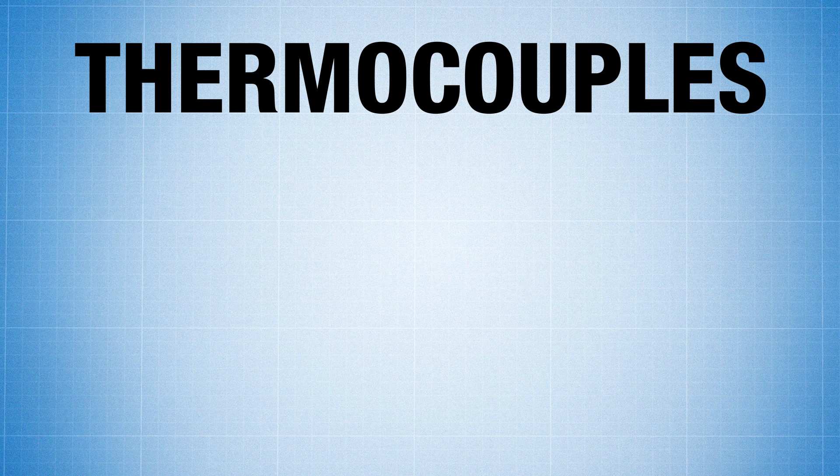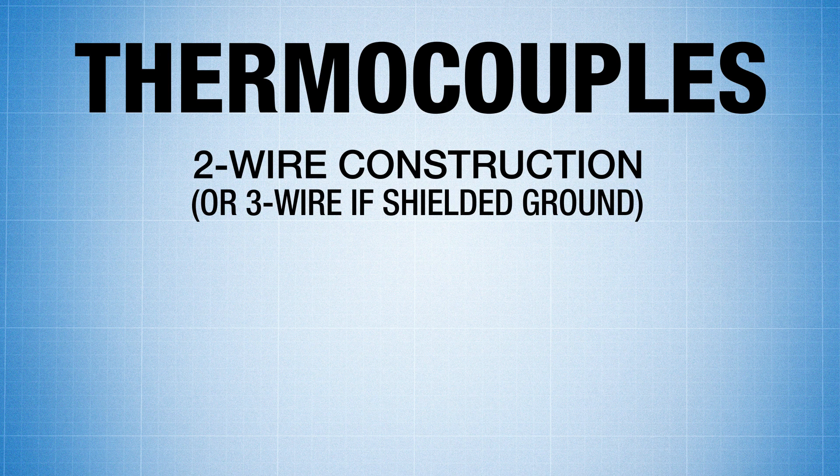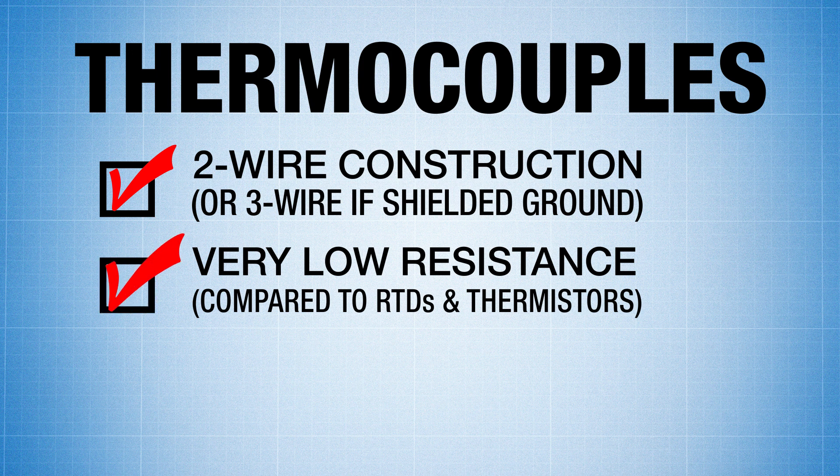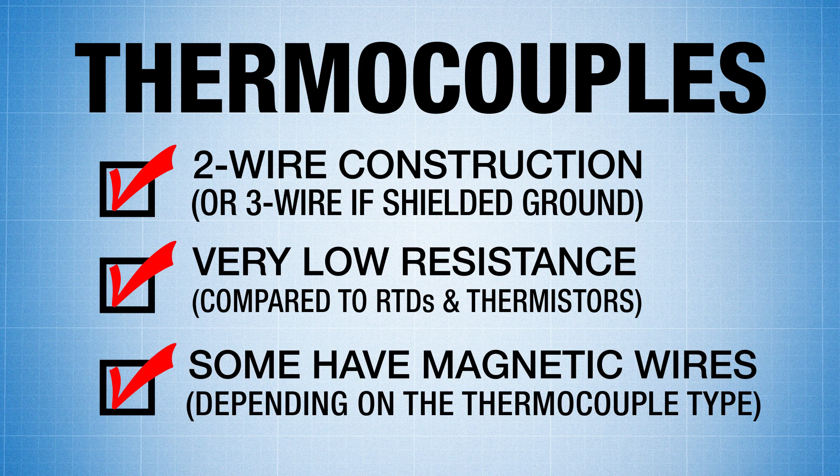First, let's look at thermocouples. They usually come in a two-wire construction or a three-wire if there's a ground or shielding wire. They have a very low resistance compared to RTDs and thermistors. And some wires can actually be magnetic depending on the type of TC.